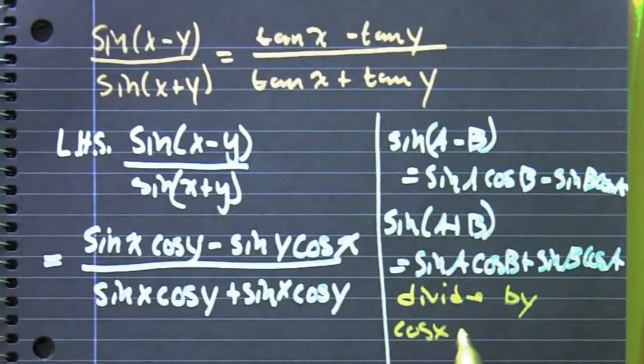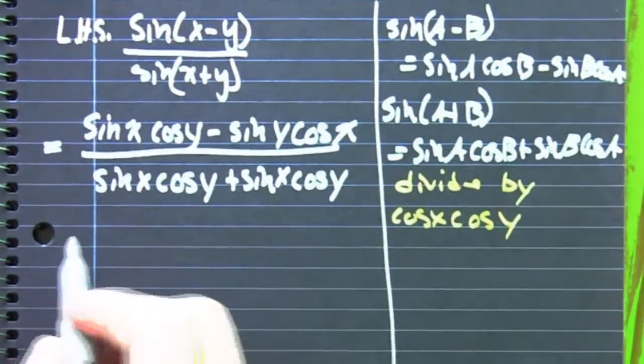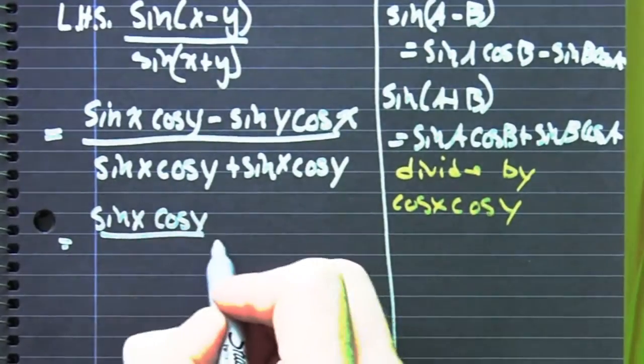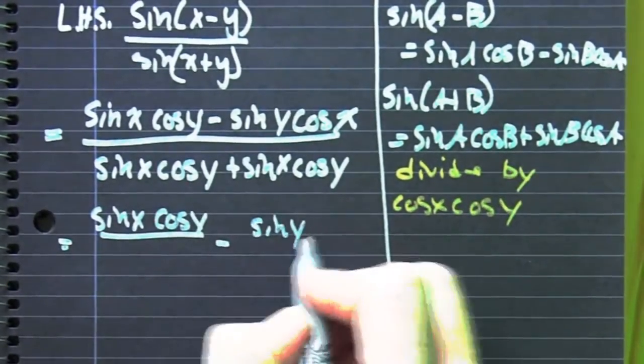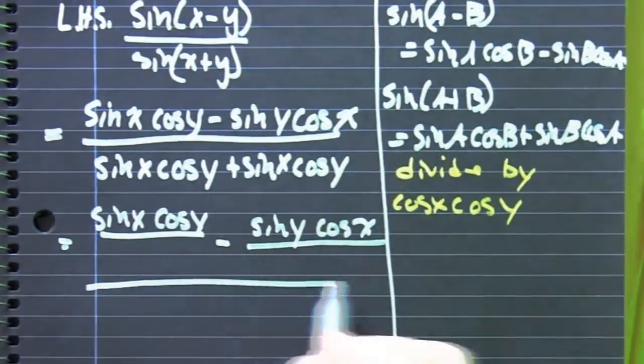You're going to divide both top and bottom by cosine x cosine y. Why? Because we're trying to get the tangent in there. And the tangent is the sine over the cosine. So it would behoove us to divide by cosines. And we go and we do that.